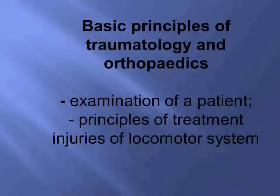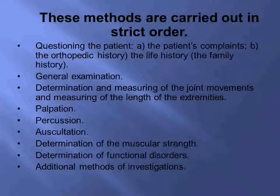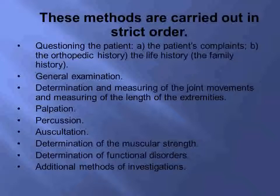Now let's talk about basic principles of how to examine our patients and, based on the diagnosis, choose proper treatment. First, you talk with the patient and collect specific complaints to identify the area of injury. You need to know the circumstances of how the injury happened — was it a fall, a pedestrian being hit by a car, or a fall from height indicating high-energy injury. Also note the mechanism: direct or indirect. Note the time elapsed since injury.